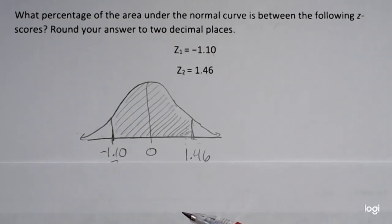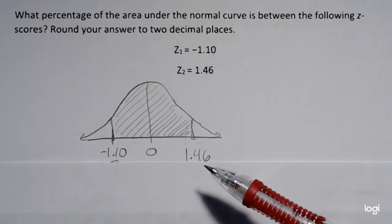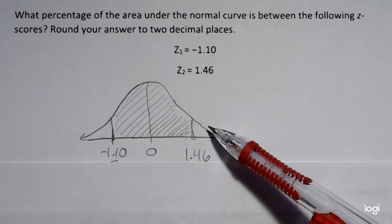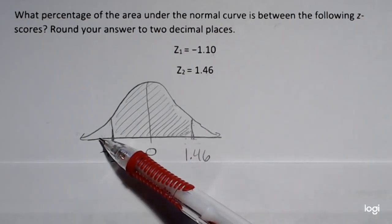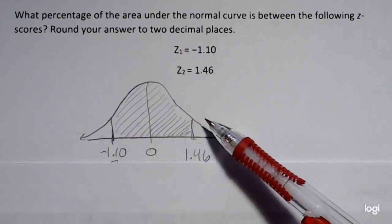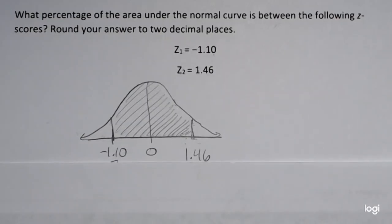If they asked for the area greater than 1.46 and less than negative 1.10, I would be shading those two outer tails instead. Now I'm going to do this two ways. I'm going to use a standard normal table and then also the TI-84 calculator.